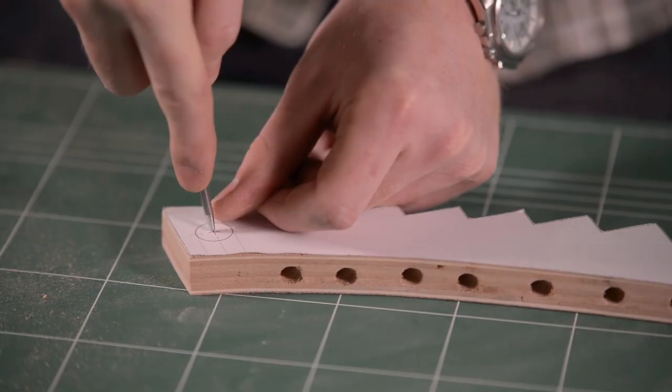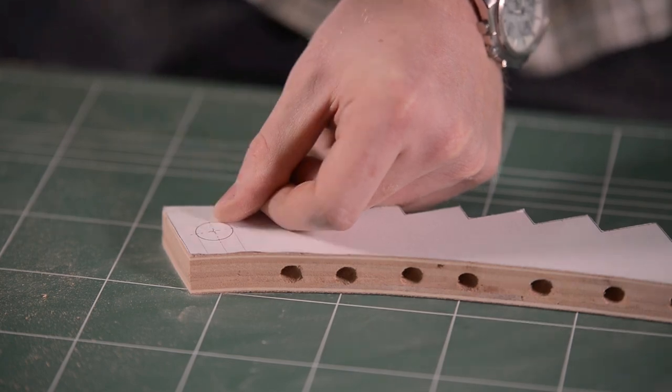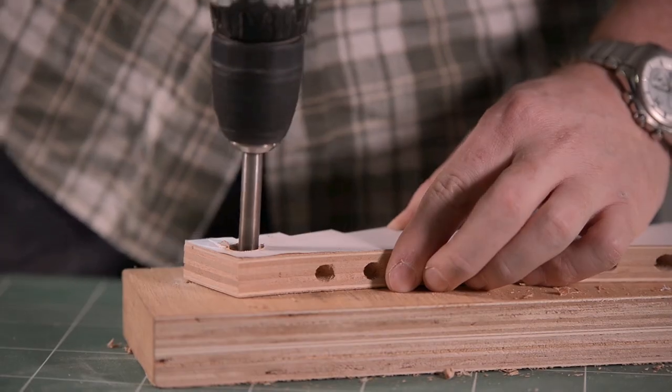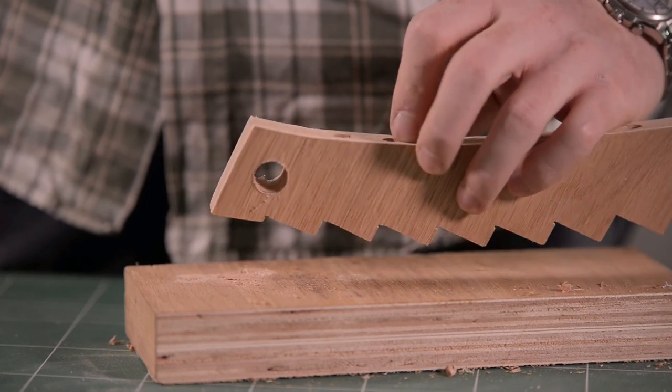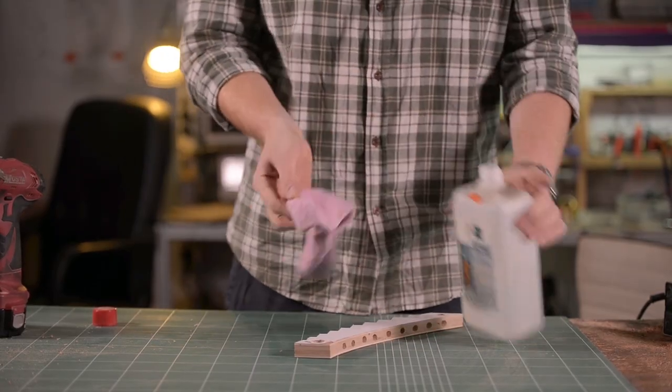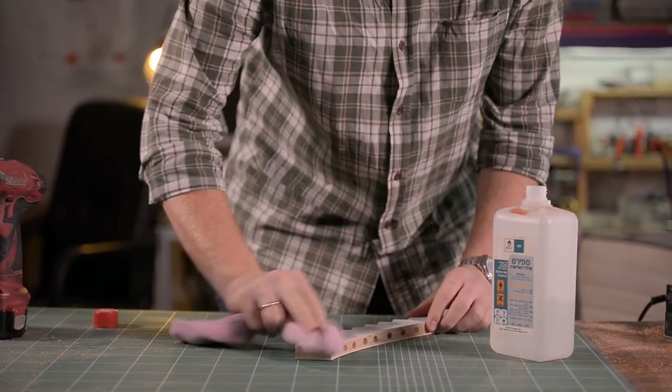After some light sanding, I center punched and drilled the holes for the legs using a 5 eighths of an inch forstner bit. In order to remove the template, I soaked the paper with mineral spirit using my lucky sock. After a few seconds, the paper peels right off.